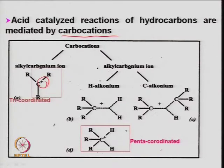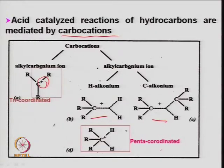Different types of carbocations — alkyl carbonium ions — can form. Formation of this carbonium ion is the primary reaction. Depending upon stability, carbonium ions can isomerize — primary goes to secondary, secondary can go to tertiary. Tertiary is more stable, then secondary, then primary, so you will have more tertiary product.